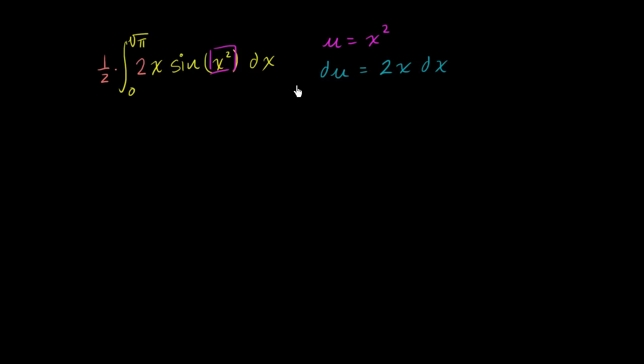And so what can we see here? Well, we have our u there. That's how we defined it. And our du is going to be 2x times dx.